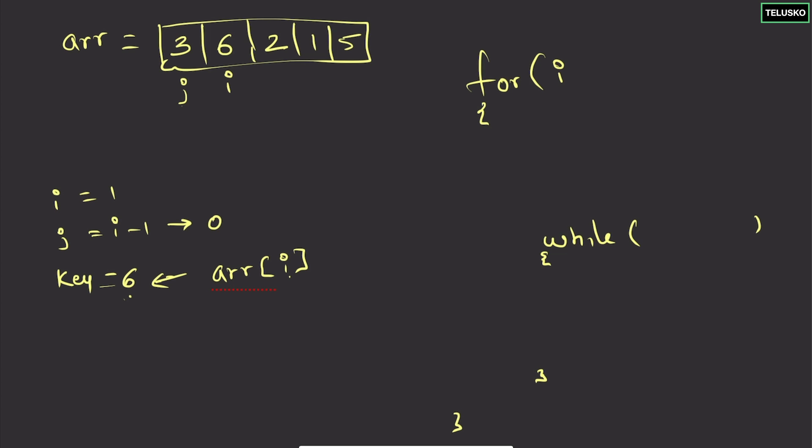For the next situation, we shift i forward and j follows, because we know that three and six are already sorted. Let's move to the next iteration.